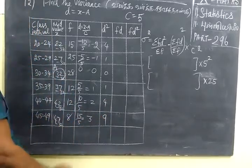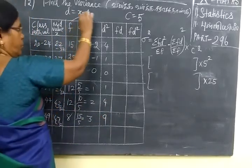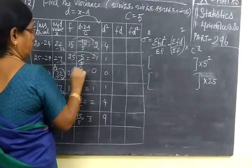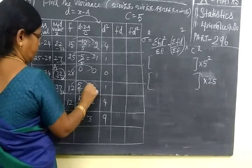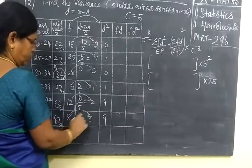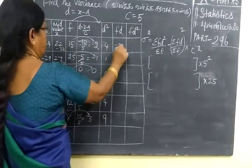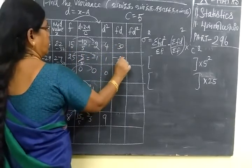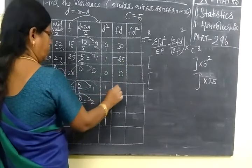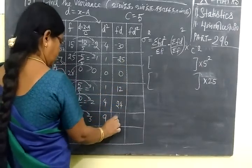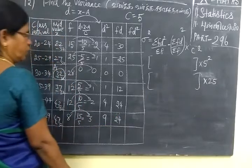Now F into D, F times D value, that means this into this. So if you multiply 15 into minus 2, minus 30, then minus 25, 0, 12, then 24, 8, 24.